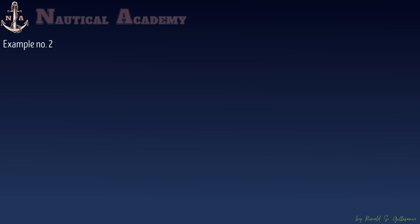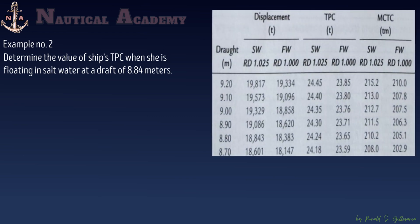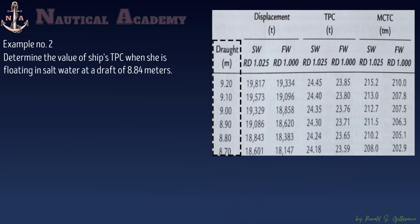The second example: determine the ship's TPC when she is floating in salt water at a draft of 8.84 meters, using the same hydrostatic table. Looking at the first column, the draft values are given in every 10 centimeters, so there is no draft of 8.84 meters. The next higher draft is 8.90 meters and the next lower is 8.80 meters. To determine the TPC at 8.84 meters, we need to perform interpolation.